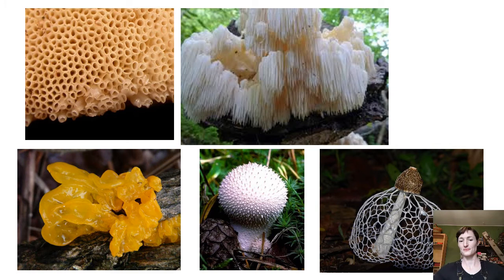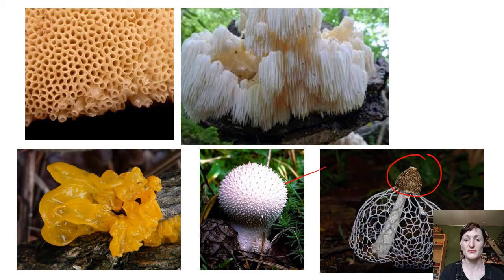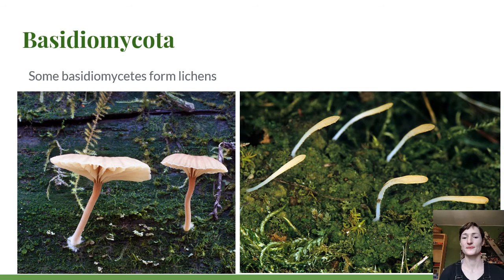A similar but inverted strategy is seen in Phallus impudicus, one of the stinkhorn mushrooms — 'phallus' referring to their penis-like shape. The spores are on top, almost like a puffball ripped open and turned inside out — just a mass of gooey spores. They stink because they're fly-dispersed: the gooey, stinky spores attract flies that walk around, get spores stuck to their feet, and fly away.